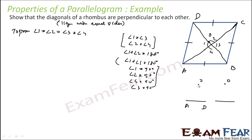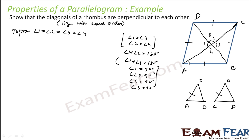In triangle AOD and triangle COD: AD = CD because sides of a rhombus are equal. AO = OC because the diagonals of a parallelogram bisect each other. OD = OD, which is the common side.